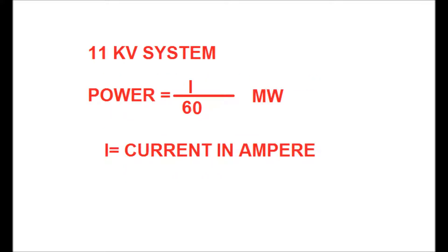For an 11 kV system, if current I is a known quantity in amperes, then if you divide I by a factor of 60, you can get the value of power in megawatts. That is the thumb rule.